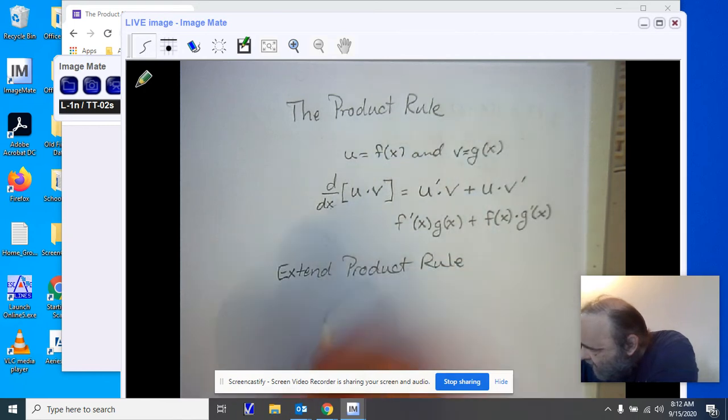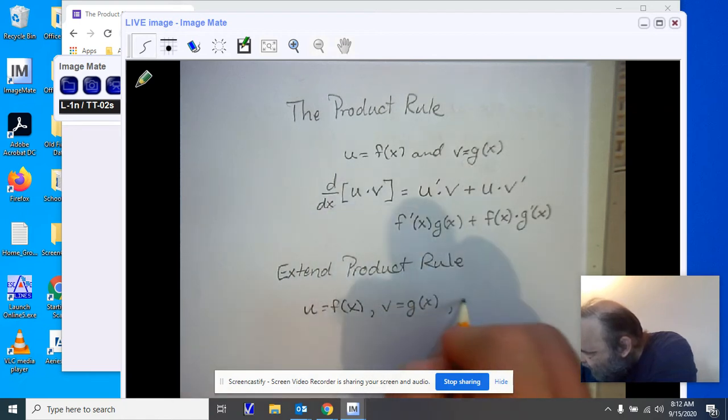When you have an extended product rule, you're going to have more than one variable. So let's call it u is f of x, v is g of x, and we're going to have w is h of x.